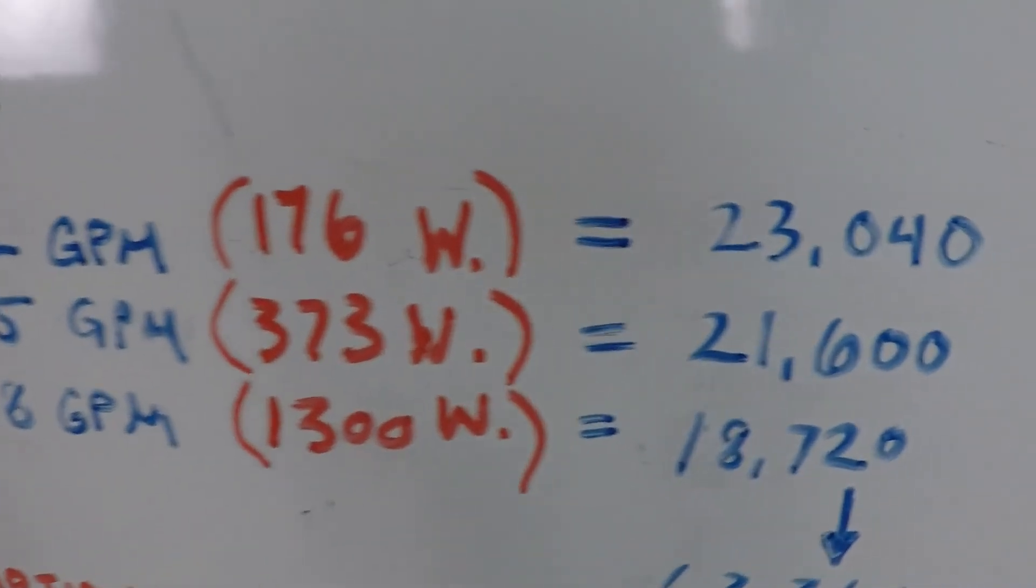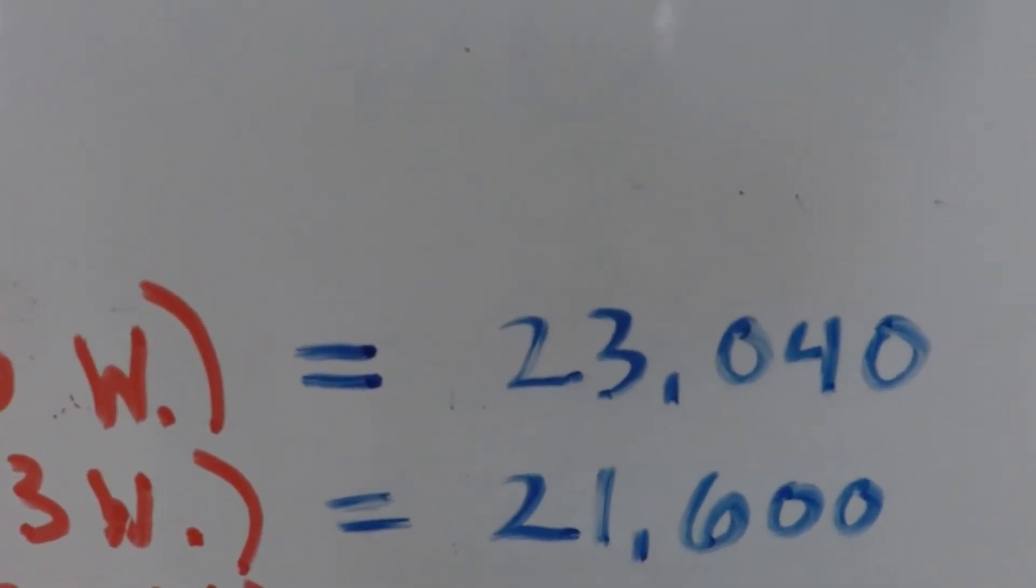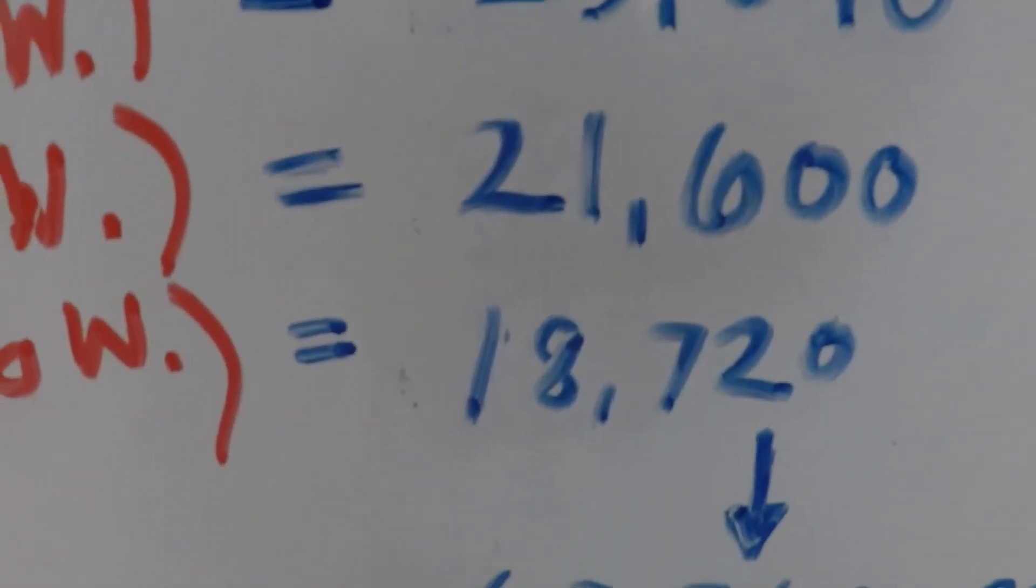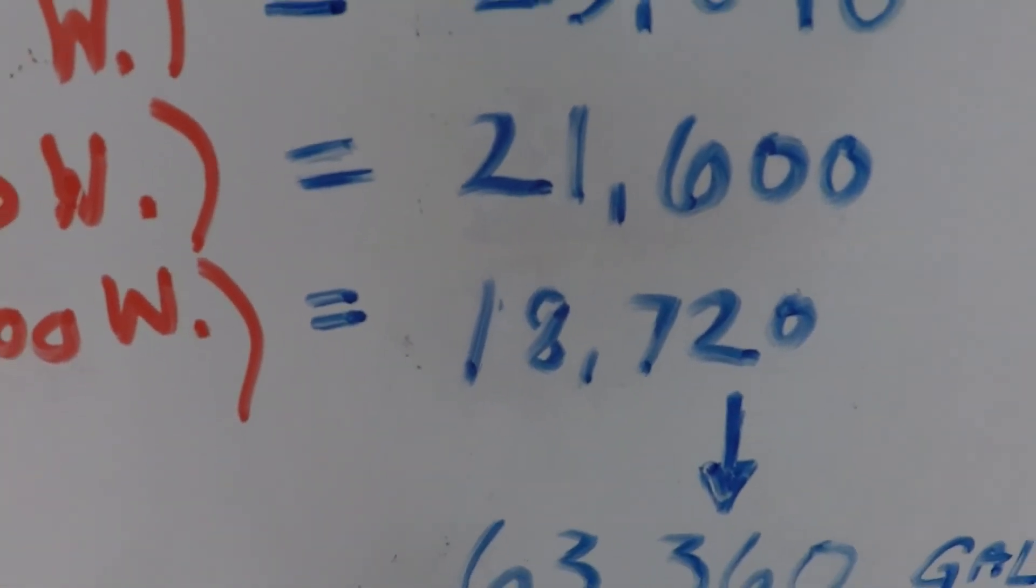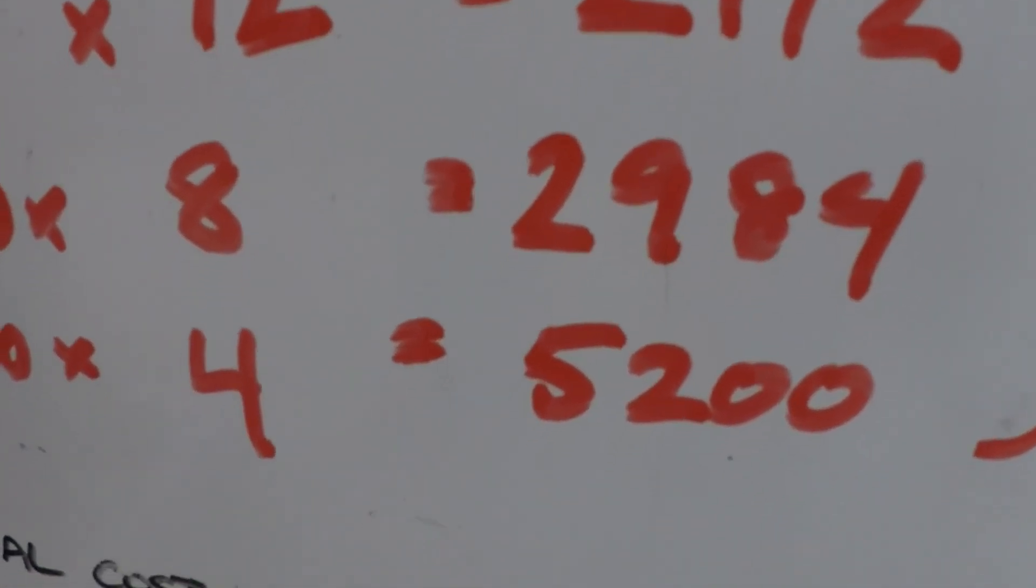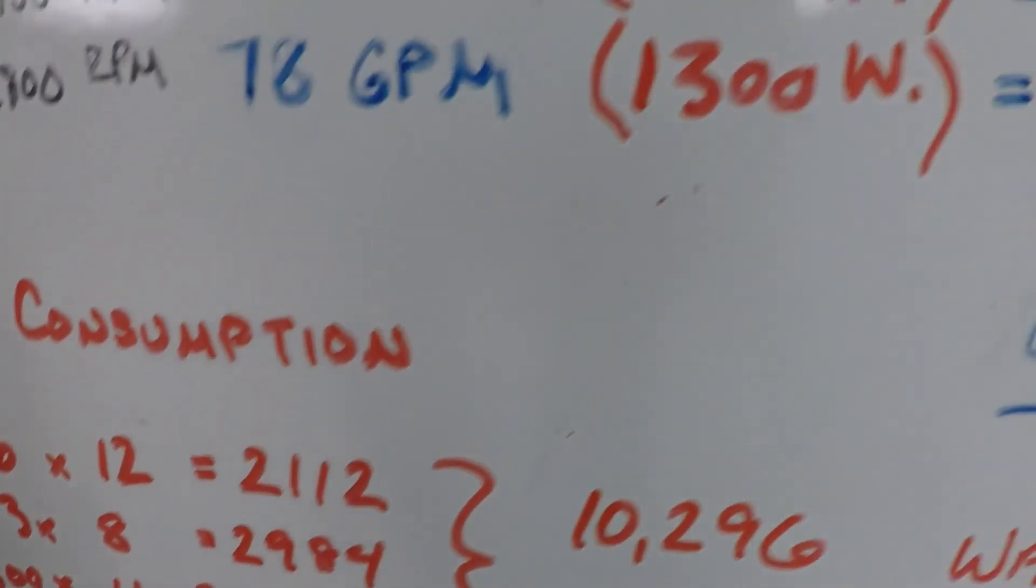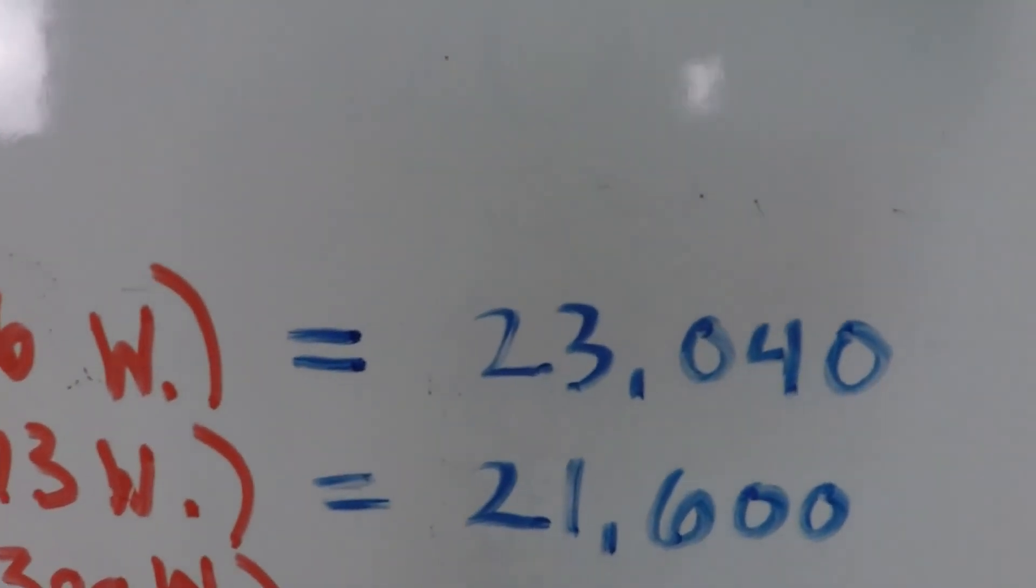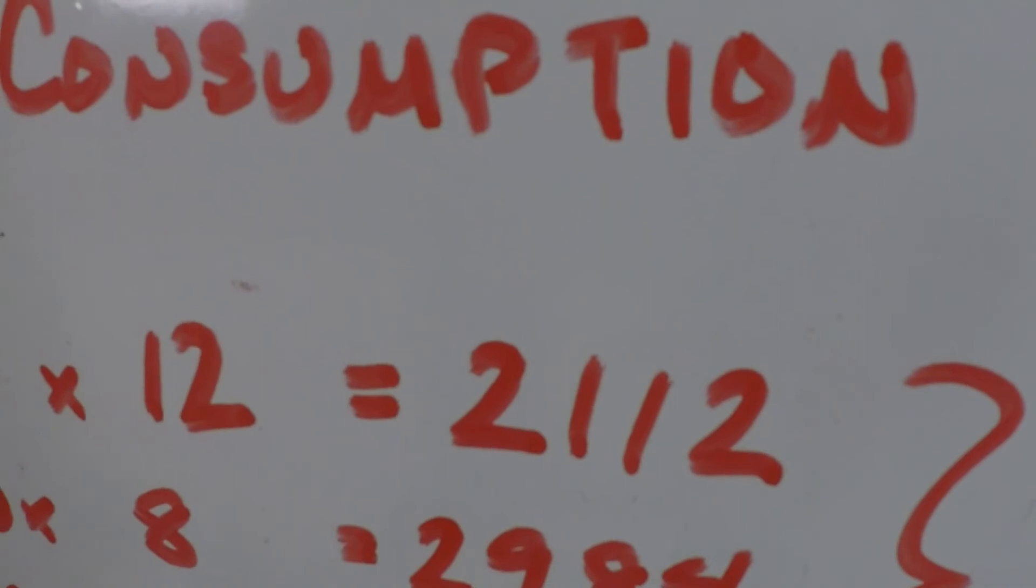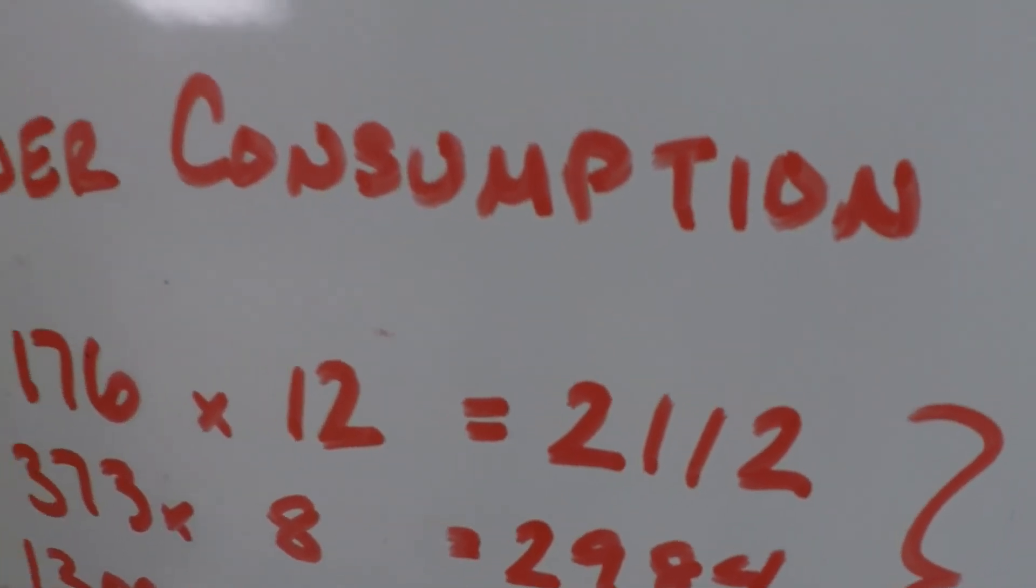Less than half the amount of power consumed over a 12 hour period versus a much higher amount of power consumed in only four hours. It's also significant because in the low speed operation we filtered 23,000 gallons of water. At high speed only 18,000. 18,000 gallons for 5200 watts of power consumption or 23,000 gallons for 2,000 watts of power consumption.